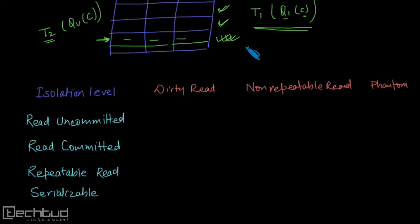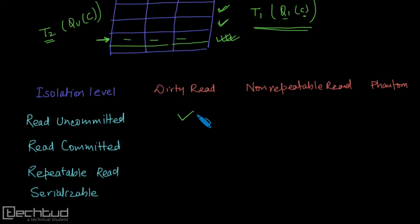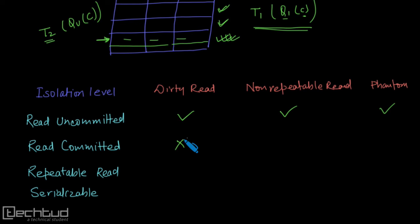Repeatable read — we have just seen what a repeatable read problem is, and this isolation level is the opposite of non-repeatable read. In read uncommitted, dirty read is allowed, non-repeatable read is allowed, and phantom phenomena is also allowed. In read committed, dirty read will not occur, but non-repeatable read may happen, and phantom phenomena is also likely to happen.